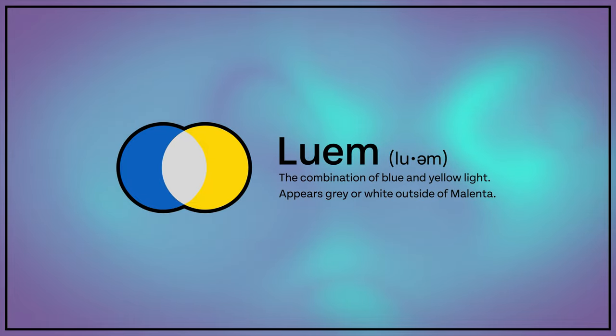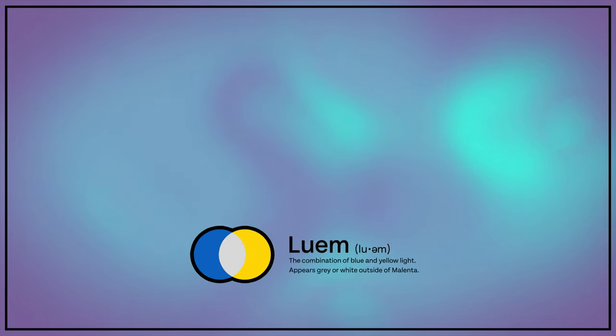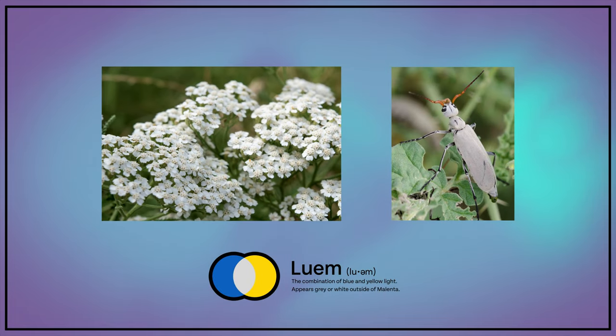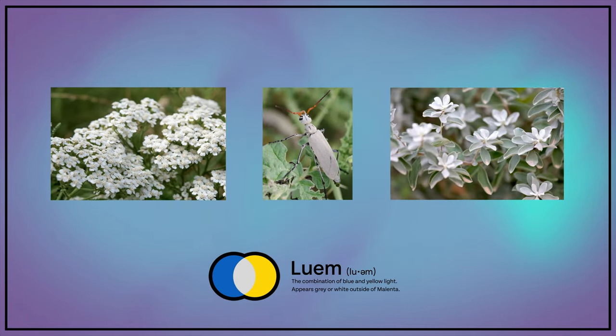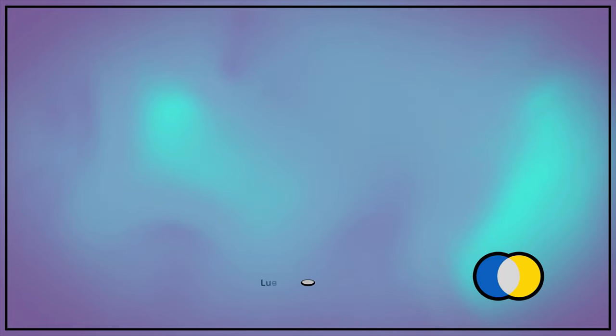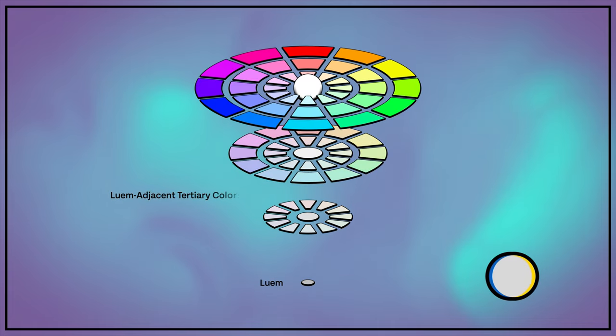Examples of this vibrant color in the wild include yarrow flowers, the backs of many blister beetles, and the leaves of Texas sage. Luam has fascinated painters and theorists alike, becoming a study of focus at Melenta University, where Aguilar trained.